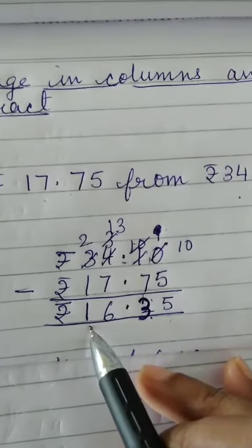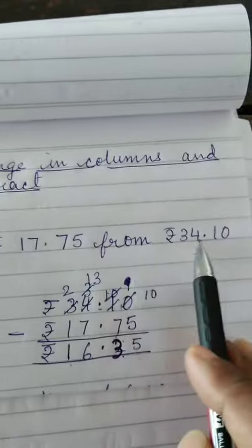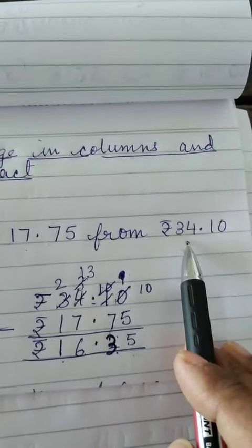The answer is Rs. 16.35. So this is how you will arrange the amount properly in columns.